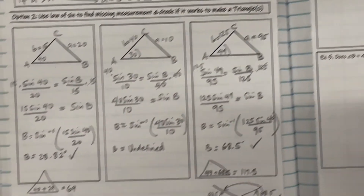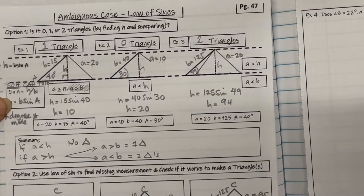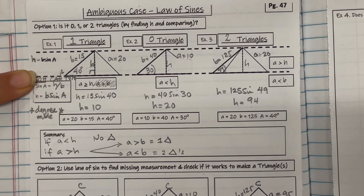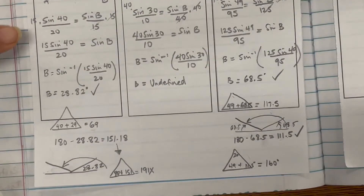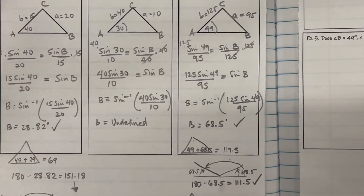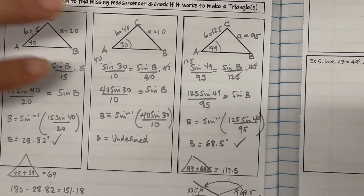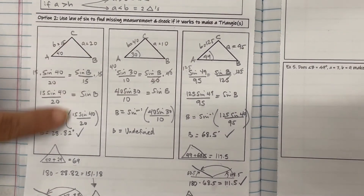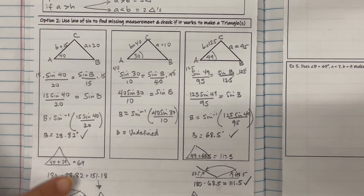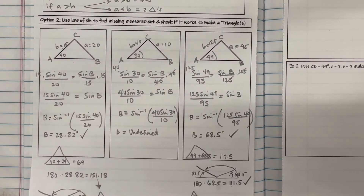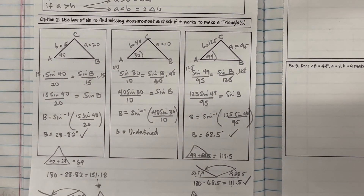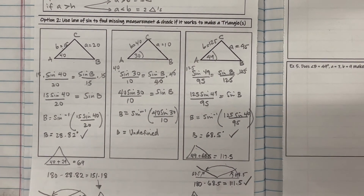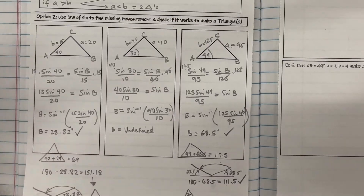You can memorize the height comparison rules, which you may forget, or you can just proceed with the law of sines, assume it makes a triangle, and then check if it does or does not. It does take a little bit of practice, so don't worry — we are going to practice in class.